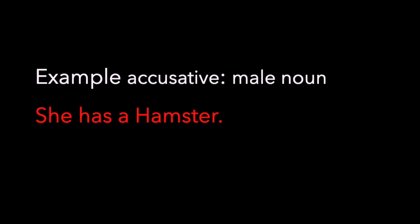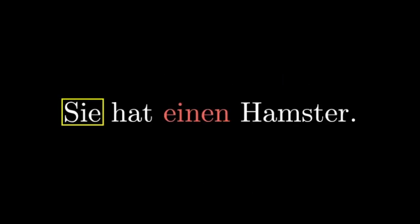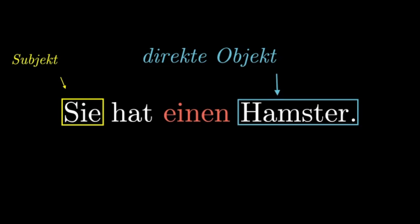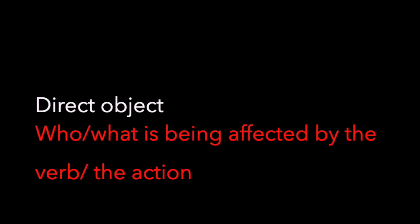Now let's do an example for the male noun in the Akkusativ case: 'She has a hamster.' She is obviously female, but Hamster — der Hamster — is male. You can pause the video, but the solution is: sie hat einen Hamster. Sie is the subject of the sentence, and der Hamster is the direct object of the sentence. So you need the Akkusativ. Akkusativ here is pointing to the Hamster, because the noun is in the Akkusativ form, so we need to use einen for the indefinite article. And if it was the definite article, it becomes: sie hat den Hamster. Remember, you need the Akkusativ for the direct object — the noun that is being affected by the action.